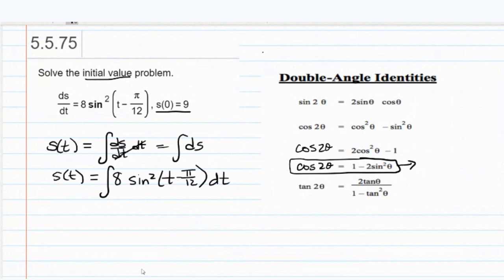You rearrange it so that you get sine squared by itself. 2 sine squared theta is going to be equal to 1 minus cosine of 2 theta, which means that sine squared theta is a half of 1 minus cosine 2 theta.